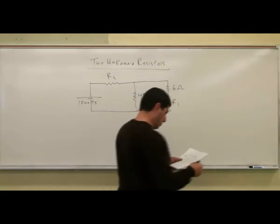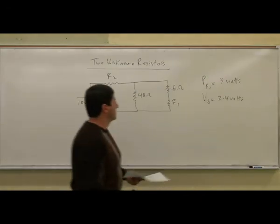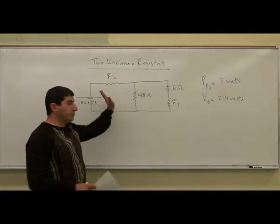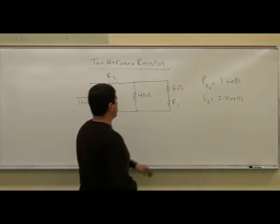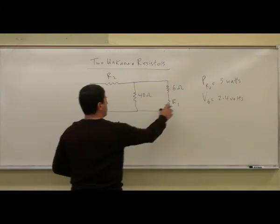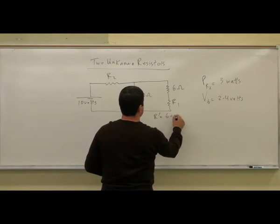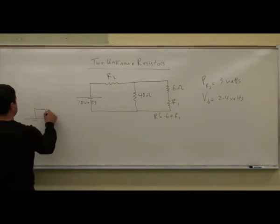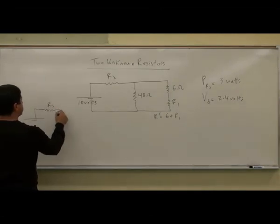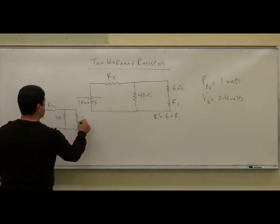The stipulation involves the power of a resistor. We want to find what R1 and R2 should be so that both conditions are met. We start by combining resistors in series: R prime equals six plus R1. It helps to redraw the circuit each time to make it a little easier.